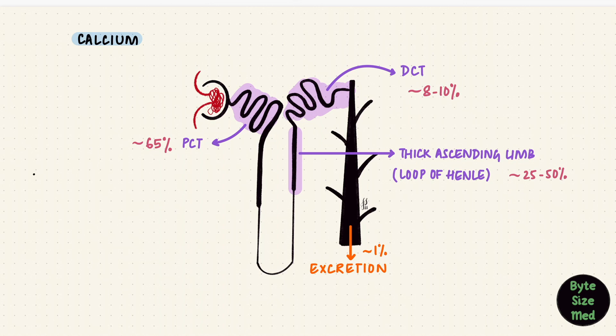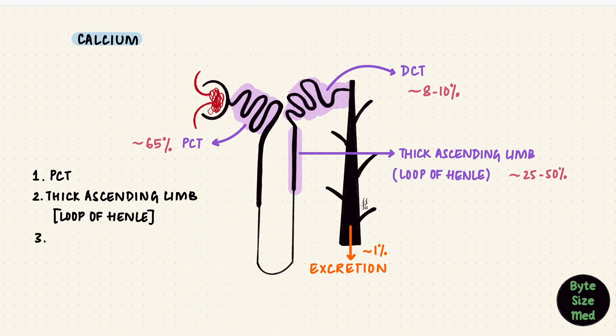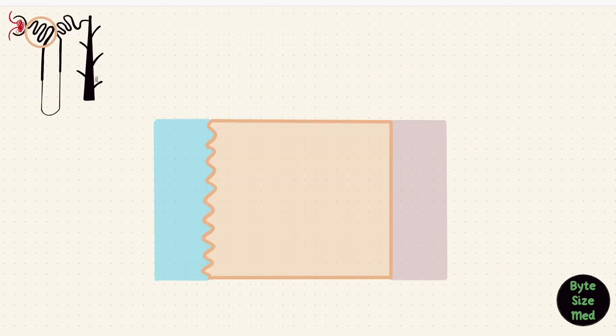That's three important parts of the renal tubule: the proximal tubule, the thick ascending limb of the loop of Henle, and the distal convoluted tubule. First let's look at the PCT, where most of the calcium gets reabsorbed.